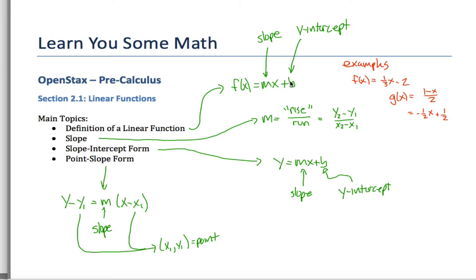In either case, b represents the y-intercept and m represents the slope. The slope is just some measure of steepness, given by the slope formula. The b is the y-intercept, and that's why it's called slope-intercept form — because you need the slope and the y-intercept.